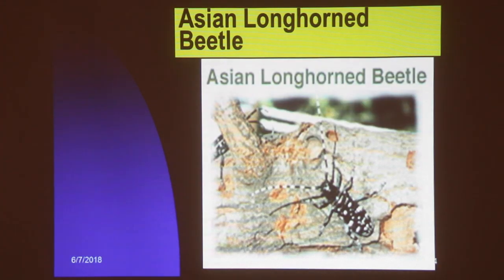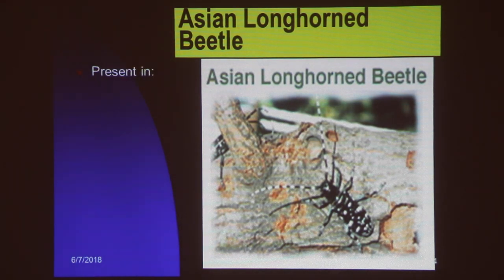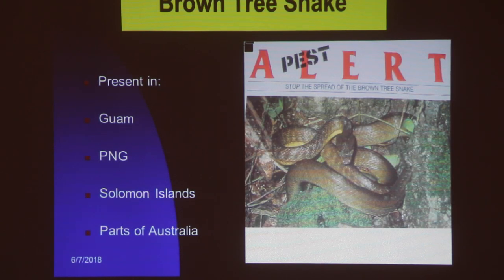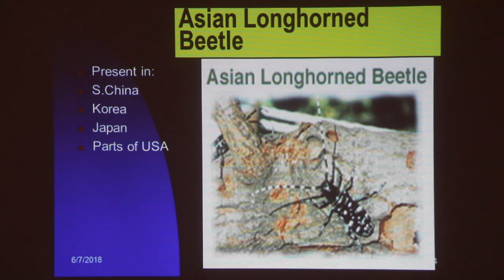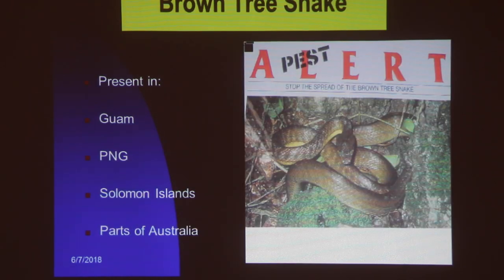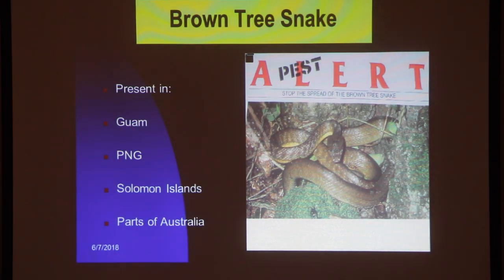Another one is the Asian longhorn beetle, present in China, Korea, Japan, and parts of the US. It attacks trees, boring holes and even killing them. If this beetle came to FSM it would be terrible for the whole environment, as we have so much agroforestry and so many trees that many would be killed.